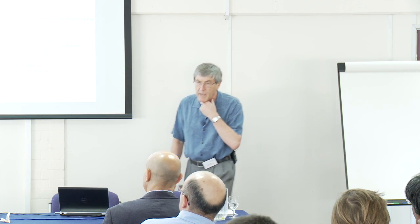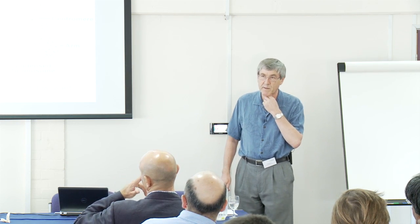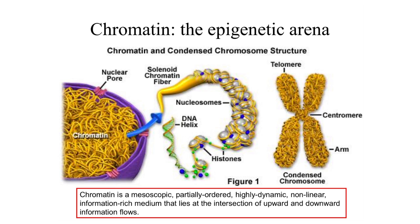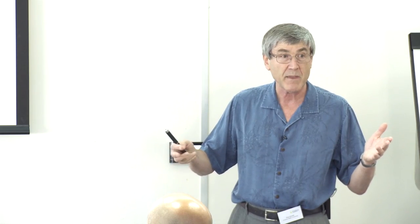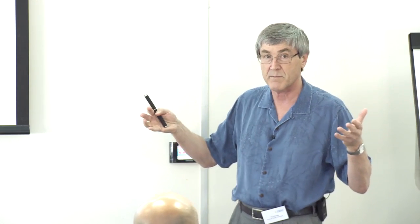The key thing about epigenetics is you can't pin it down to a particular physical location. With genetics, if you ask 'where is the genome?' a biologist can show you a physical object — it's a molecule, it's DNA. But if you ask 'where is the epigenome?' it's distributed throughout the system. It's a sort of virtual, non-local thing.